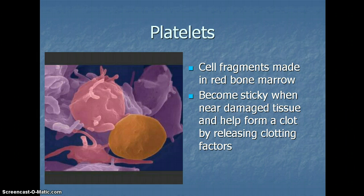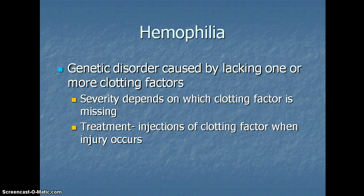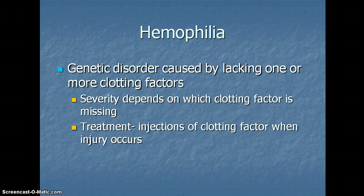The last type of cell in the blood we are going to talk about is platelets. Platelets are cell fragments that are made in the red bone marrow. Platelets become sticky when near damaged tissue and help form a clot by releasing clotting factors. Hemophilia is a genetic disorder caused by lacking one or more of the clotting factors. The severity depends on which clotting factor is missing. The current treatment is injecting clotting factor when injury occurs. Interestingly, in hemophilia, injuries that do not break the surface of the skin, like a bruise, are far more dangerous than ones that actually break the skin, because broken skin sets off a different cascade that minimizes the problems caused by the missing clotting factors.